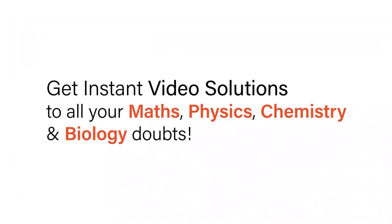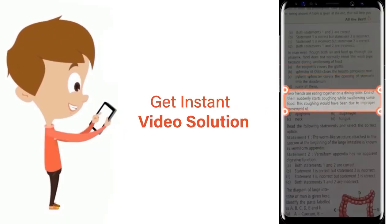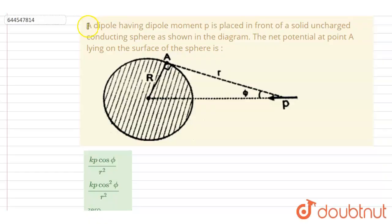With Doubtnut, get instant video solutions to all your maths, physics, chemistry and biology doubts. Just click the image of the question, crop the question, and get instant video solution. Download Doubtnut app today. Hello everyone, a dipole having dipole moment p is in front of a solid uncharged conducting sphere.